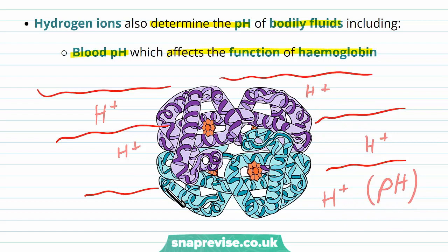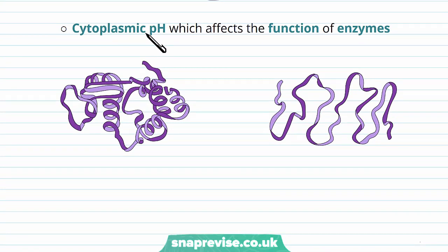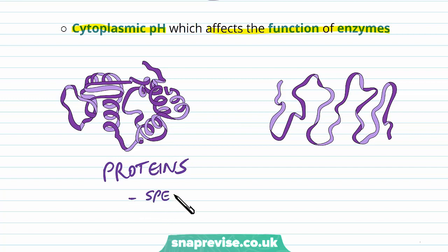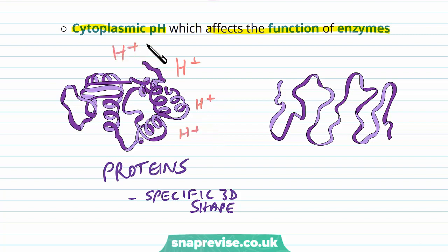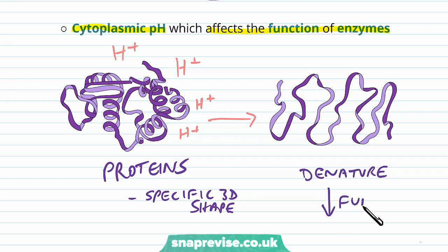If the pH of the blood changes too much, then the structure of haemoglobin can alter, and if we alter this too much, then it becomes unable to carry oxygen, and this could be fatal. Not only do bodily fluids require pH maintenance, but cytoplasmic pH must be maintained too. If this changes, we can affect the function of enzymes. Proteins include enzymes and they have a specific 3D shape for their function. If the pH of the cytoplasm varies too much — because there are too many or too few hydrogen ions — this can cause the protein to lose its shape and denature, removing the function of the enzyme. So the level of hydrogen ions must be very carefully kept the same.